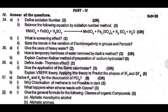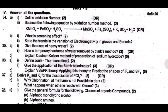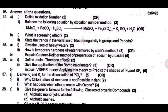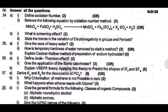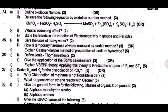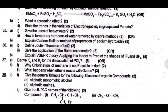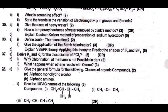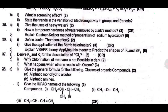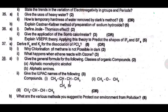Thirty eight A — give the general formula for the following classes of organic compounds: aliphatic monohydric alcohol, aliphatic amines. Give the IUPAC names of the following compounds: CH₃CH₂CH₃, CH₃Br, CH₃OCH₃.